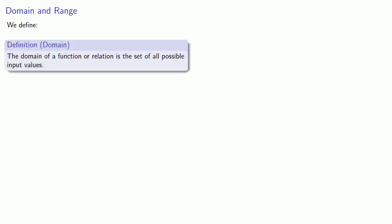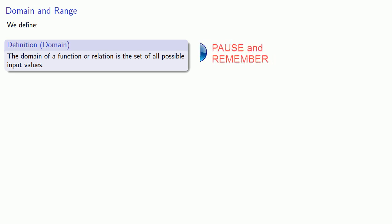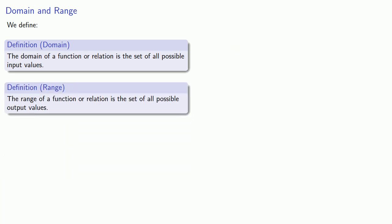Given a function or relation, it's useful to define the following. We define the domain of a function or relation as the set of all possible input values. On the other hand, the range of a function or relation is the set of all possible output values.